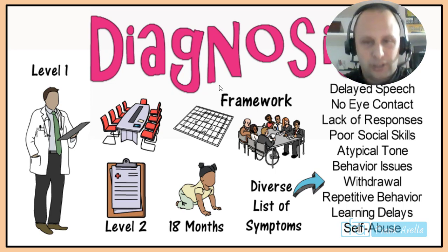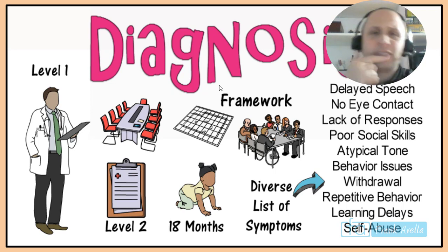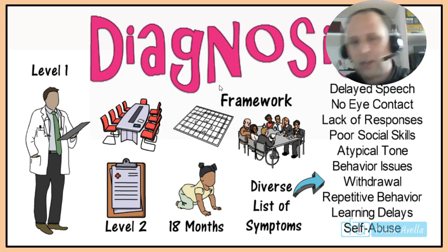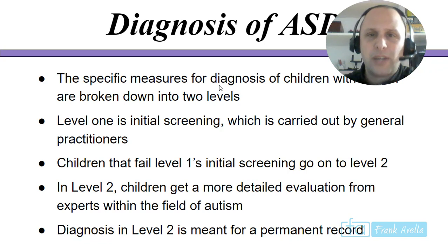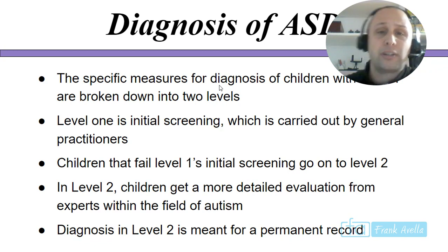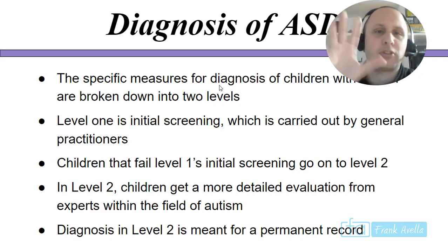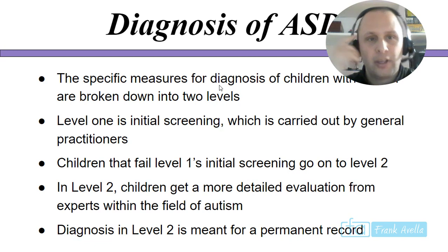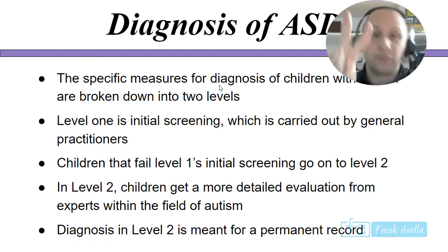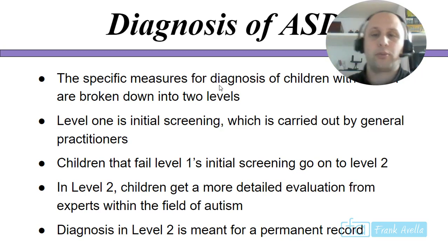Moving on to diagnosis. The specific measures for diagnosing children with autism are broken down into two levels. Level one is initial screening, carried out by general practitioners. Children that fail level one's initial screening go on to level two, where they get a more detailed evaluation from experts within the field of autism. Diagnosis in level two is meant for permanent record.